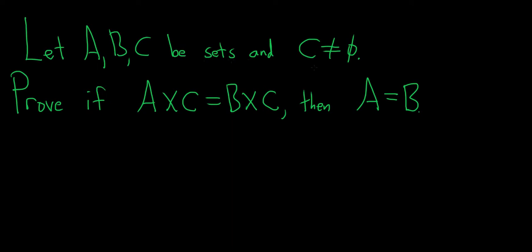Let A, B, and C be sets and C not equal to the empty set. Prove that if A cross C equals B cross C, then A equals B.